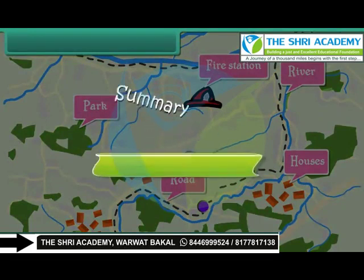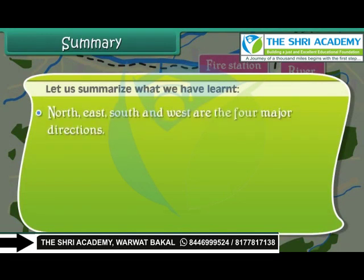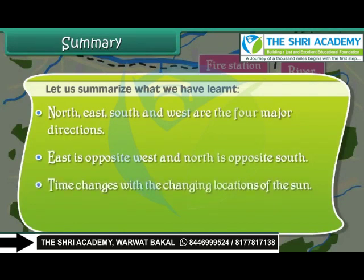Let us summarize what we have learned. North, East, South, and West are four major directions. East is opposite West, and North is opposite South. Time changes with the changing locations of the sun. A map helps us to locate a place.